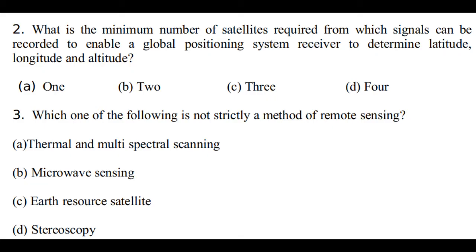Question 2: What is the minimum number of satellites required from which signals can be recorded to enable a GPS receiver to determine latitude, longitude and altitude? Option A is 1, option B is 2, option C is 3, option D is 4. The correct answer is 4. But if it is only latitude and longitude, then 3 is sufficient. For this question, since it asks for latitude, longitude and altitude, the correct answer is 4.